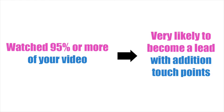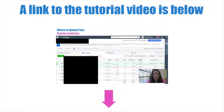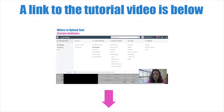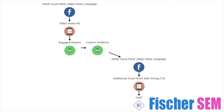You can capture this audience by creating a custom audience for people who have watched a percentage of your video. I have a free tutorial video on how to create custom audiences that I will link below. You can then select this audience while you build out an additional touch point campaign.